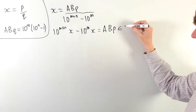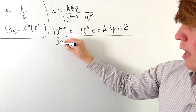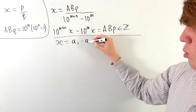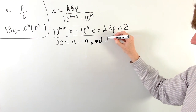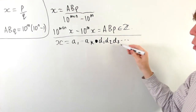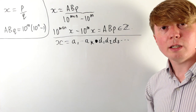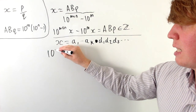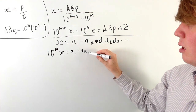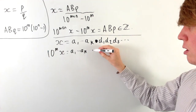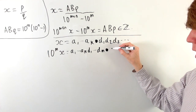Let's think about the decimal expansion of x. We'll say x is a1 up to ak before the decimal point, then d1, d2, d3, and so on after the decimal point — this could go on forever. If we multiply by 10 to the power of m, our digits d1 up to dm are all now before the decimal point, and after the decimal point we get dm+1, dm+2, and so on. Similarly, if we multiply x by 10 to the m+n, we get a1 up to ak, then d1 up to dm+n before the decimal point, and dm+n+1, dm+n+2, and so on after.